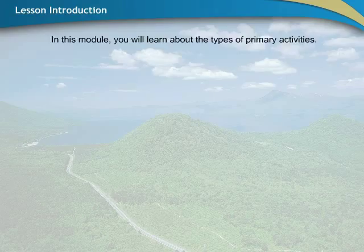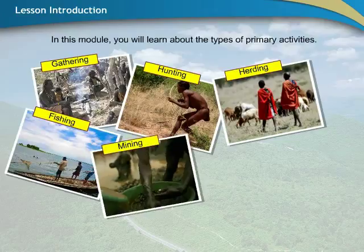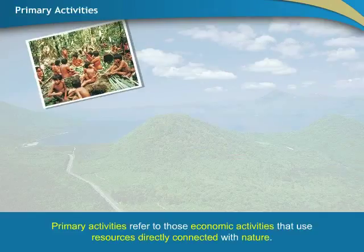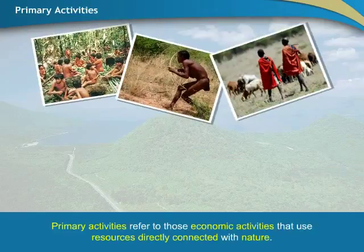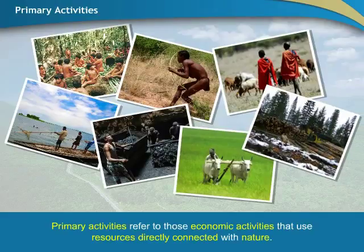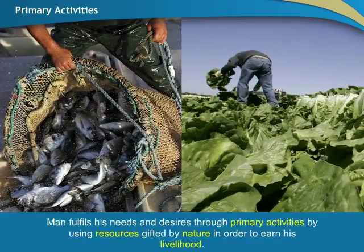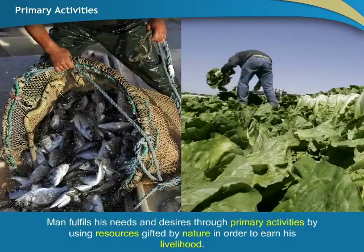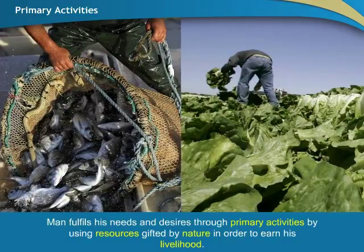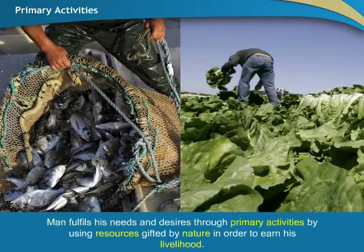In this module, you will learn about the types of primary activities. Primary activities refer to those economic activities that use resources directly connected with nature. Man fulfills his needs and desires through primary activities by using resources gifted by nature in order to earn his livelihood.